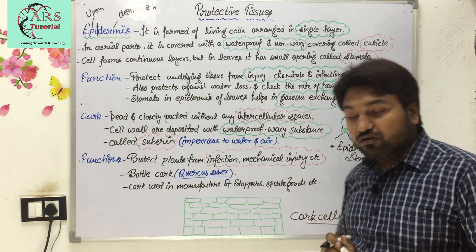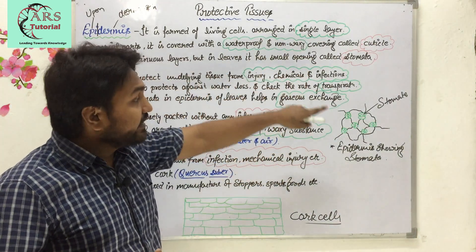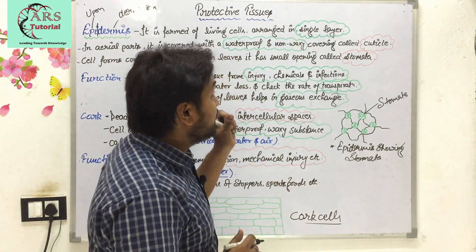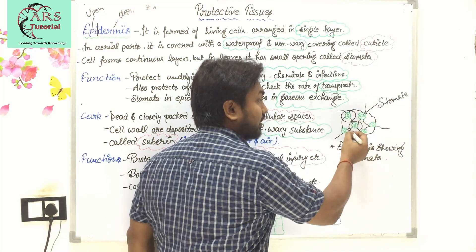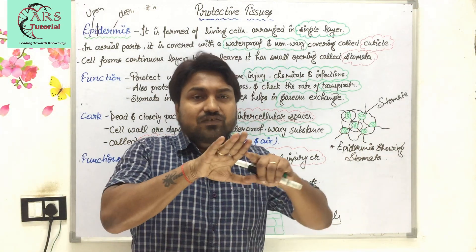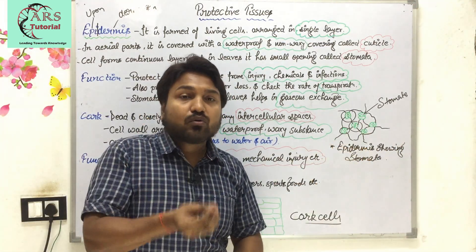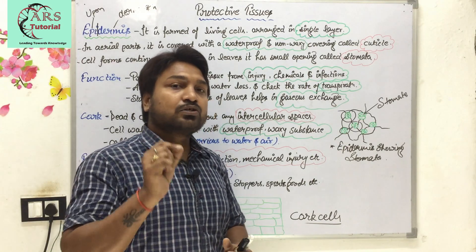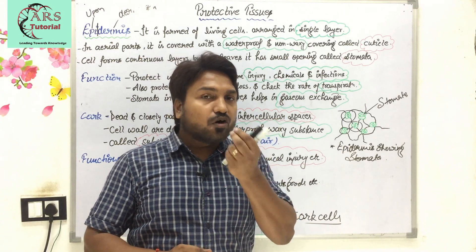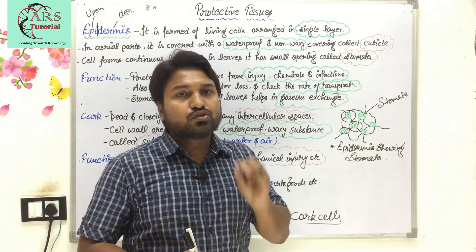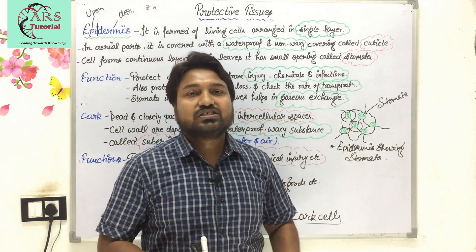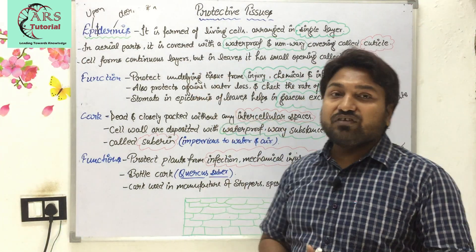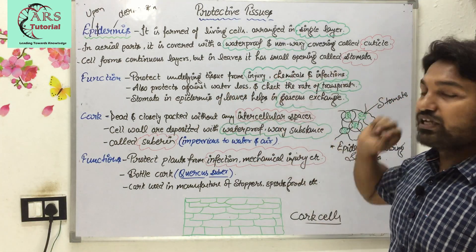The cells of epidermis form a continuous layer, but in leaves it has a small opening called stomata. Epidermis is a continuous layer with no openings in most areas, but at the position of stomata in leaves, there is a small opening so that gaseous exchange can take place. Stomata allow gaseous exchange. That is why I have written that cells form a continuous layer, but in leaves it has a small opening called stomata.